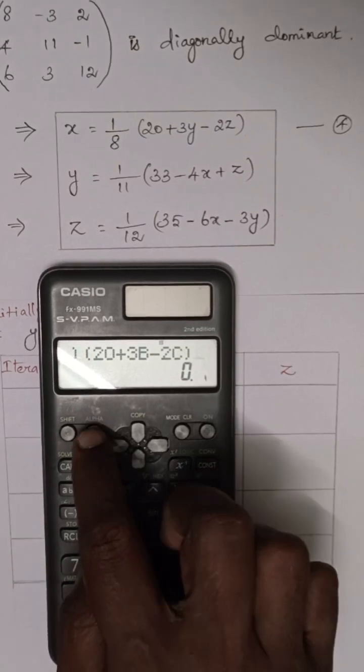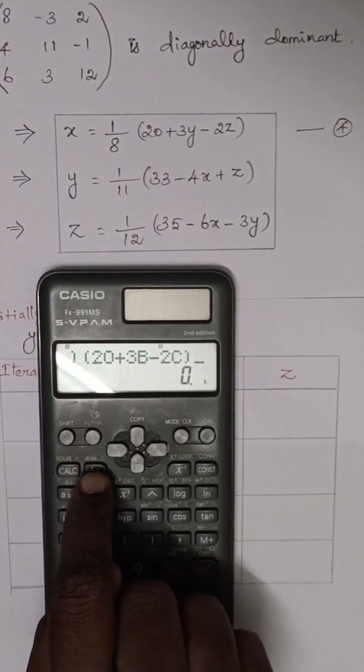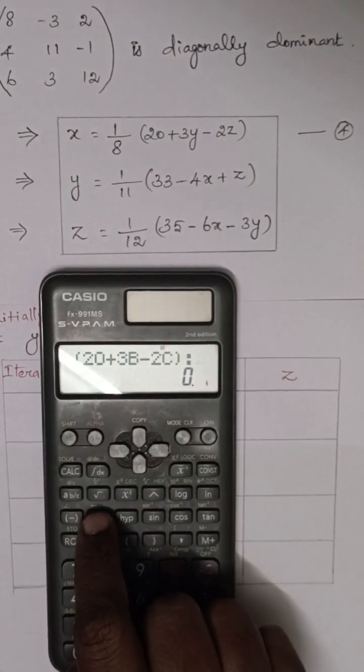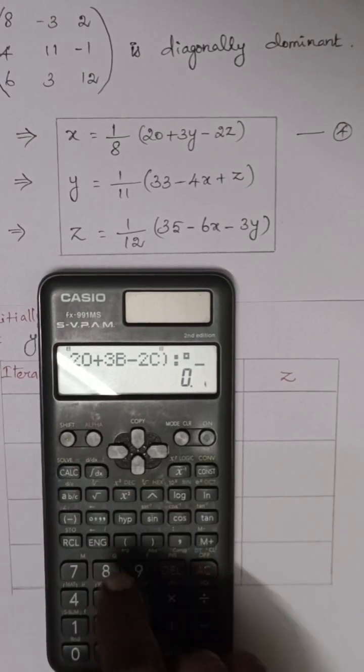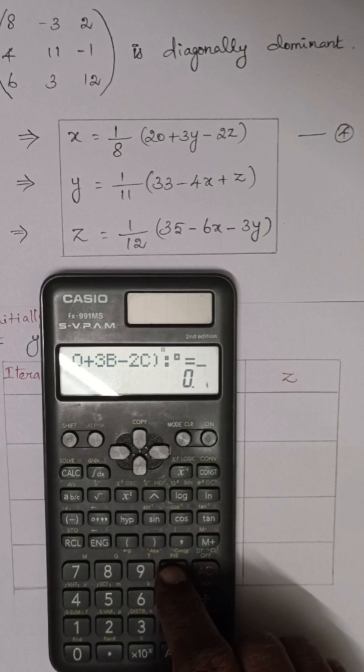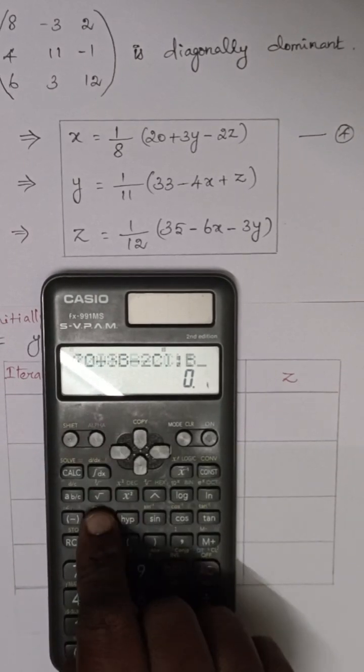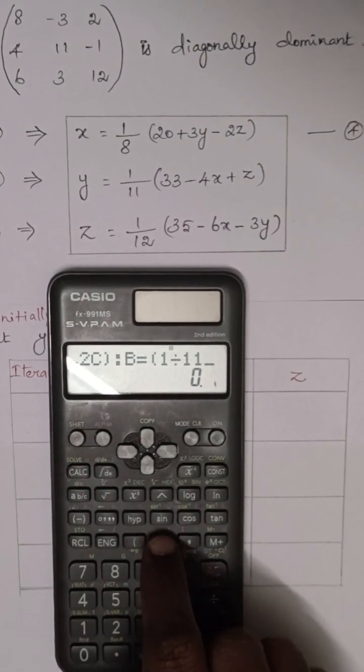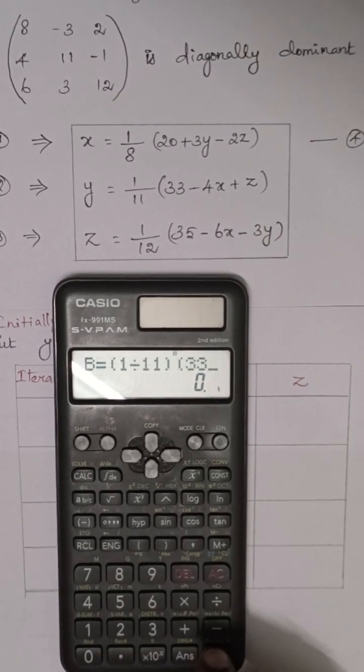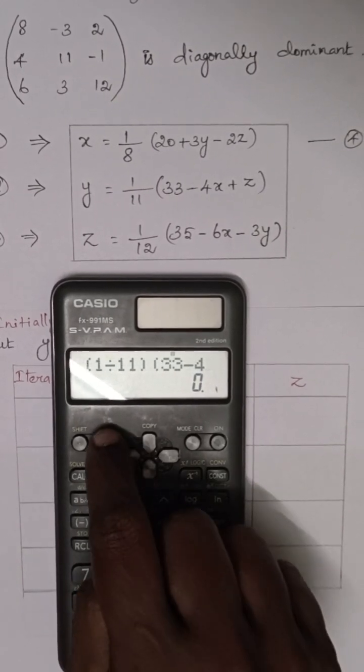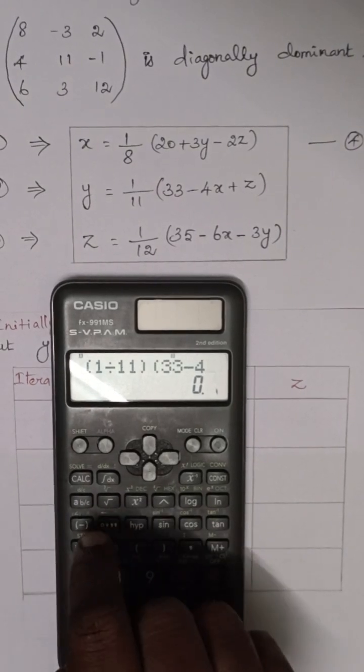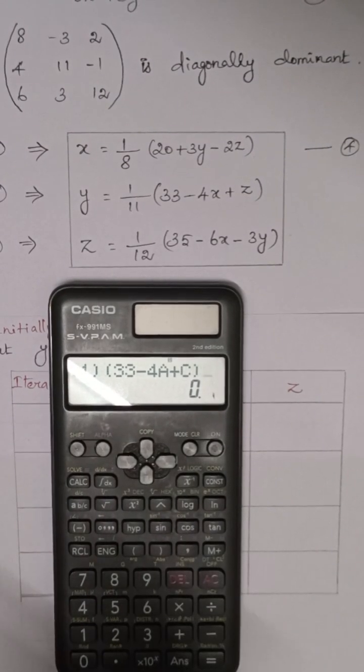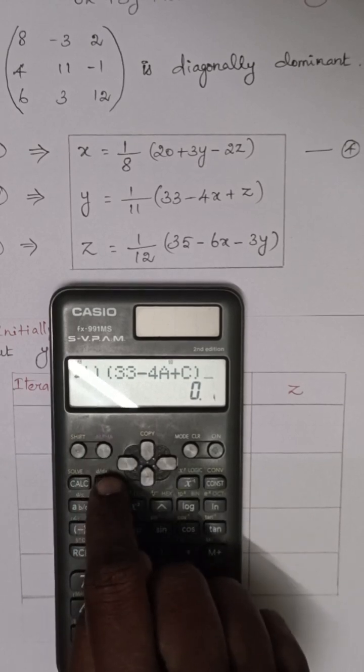Next, second equation. Again alpha, d by dx button click. Then next, second equation b. Alpha b equals open the bracket, 1 divided by 11, close the bracket and again open 33 minus 4 alpha a plus c, close the bracket. Second equation is fed.